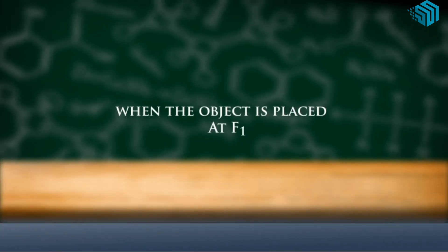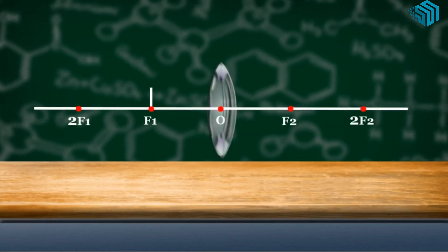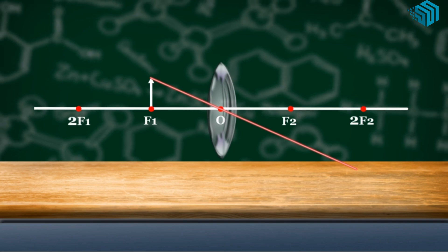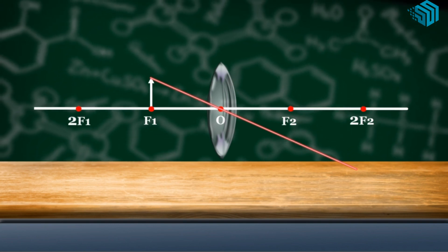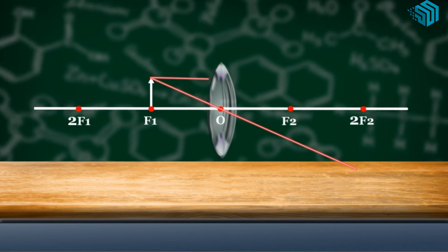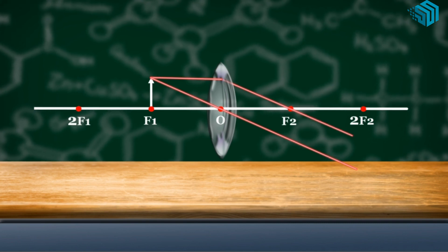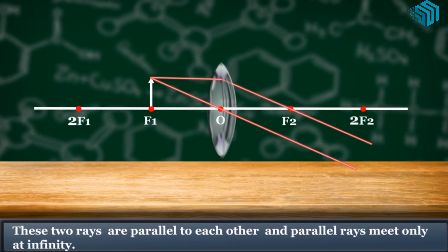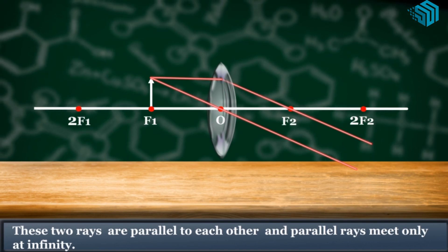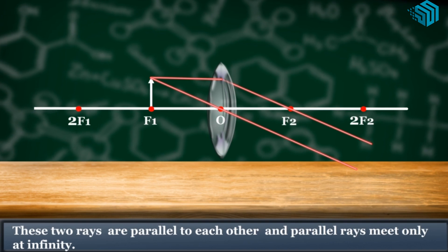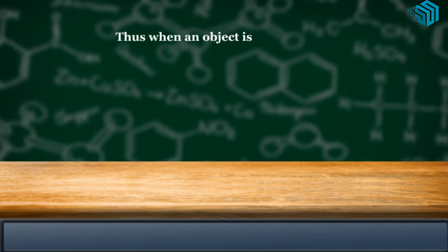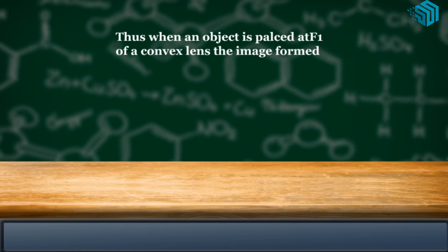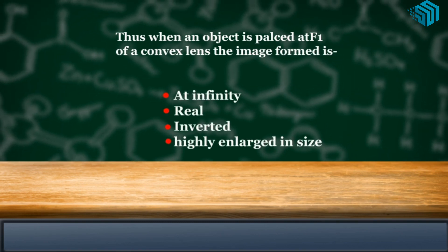When the object is placed at F1: a ray passes through the optical center without any deviation, and a ray parallel to the principal axis after refraction passes through F2. These two refracted rays are parallel to each other, and parallel rays meet only at infinity. Thus, when an object is placed at F1 of a convex lens, the image formed is at infinity — real, inverted, and highly enlarged in size.